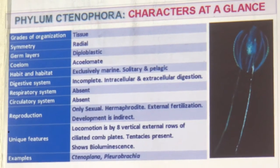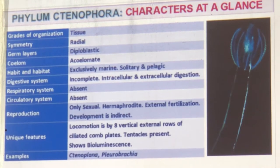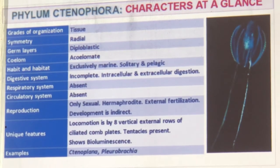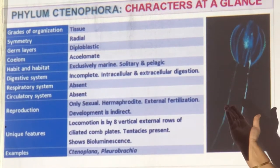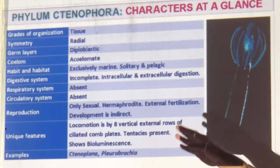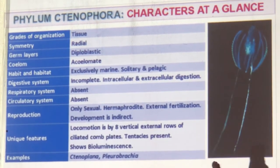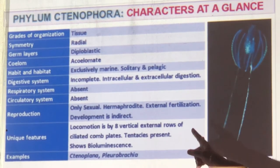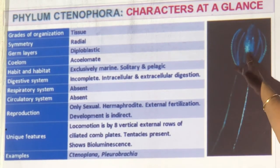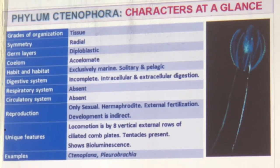Revision of Ctenophora: tissue level, radial symmetry, two germ layers, no coelom, only marine and solitary, bottom feeder. Incomplete digestive system — both intracellular and extracellular digestion. No respiratory or circulatory system. Reproduction: no asexual, hermaphrodite, external fertilization, larvae present — indirect development. Unique: eight vertical rows of ciliated comb plates, tentacles present, and bioluminescence. Examples: Ctenoplana and Pleurobrachia.